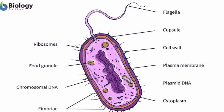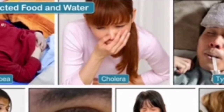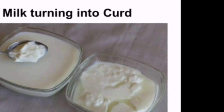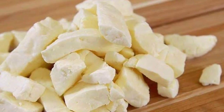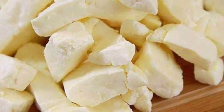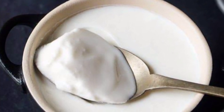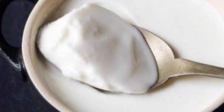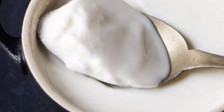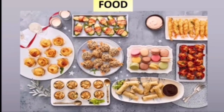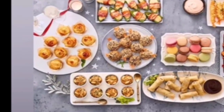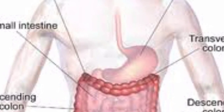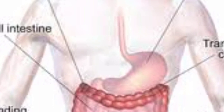Some harmful bacteria cause diseases like cholera, tuberculosis, tetanus, typhoid, and pneumonia. Some useful bacteria help us make curd and cheese. Curd becomes thick because a large number of friendly bacteria grow in it. It takes less time to set the curd in summers because bacteria grow faster in warm weather. It is always healthy to add curd in our daily meals. Some other useful bacteria live in our intestines and help us in digesting our food.